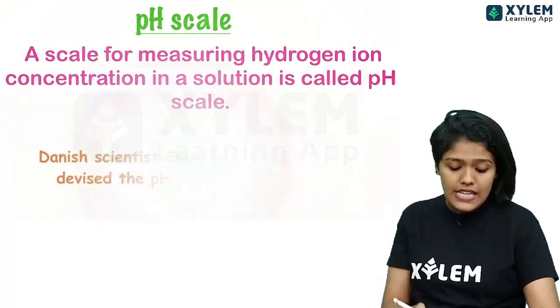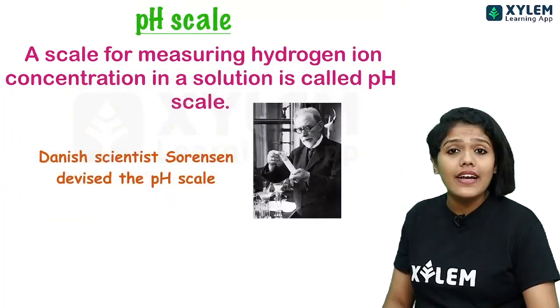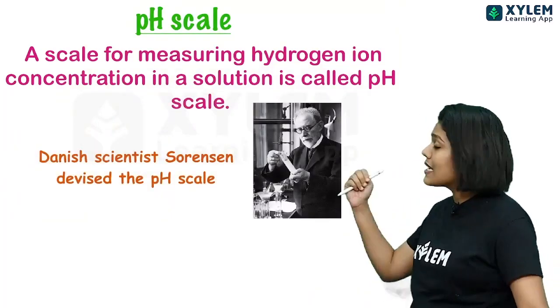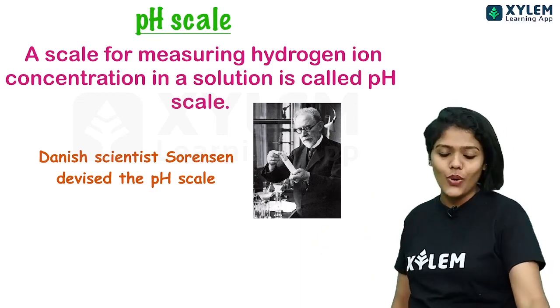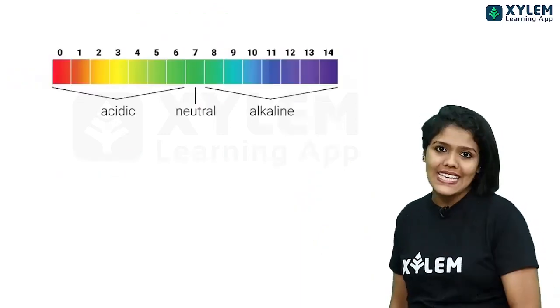The pH scale was devised by Danish scientist Sorensen. He was a chemist. Now let's look at the pH scale.